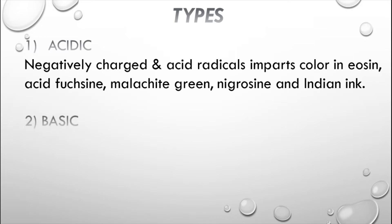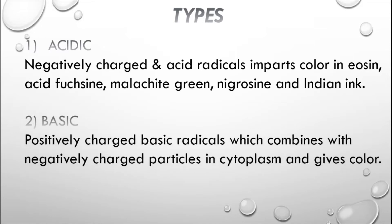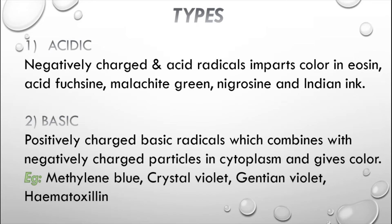The second type is the basic stain, which has positively charged basic radicals that combine with the negatively charged particles in the cytoplasm and impart color. So they have more affinity towards the negatively charged particles in the cytoplasm. Examples include methylene blue, crystal violet, gentian violet, and hematoxylin, all commonly used in the laboratory. Particularly, crystal violet is most commonly used in the Gram stain.